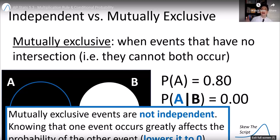So not only are these events not independent, they're extremely dependent. Knowing that B occurred completely affected and erased the probability of A. So knowing that B occurs gives you a lot of information about A. It lowers it to zero. So these are mutually exclusive events are not independent.